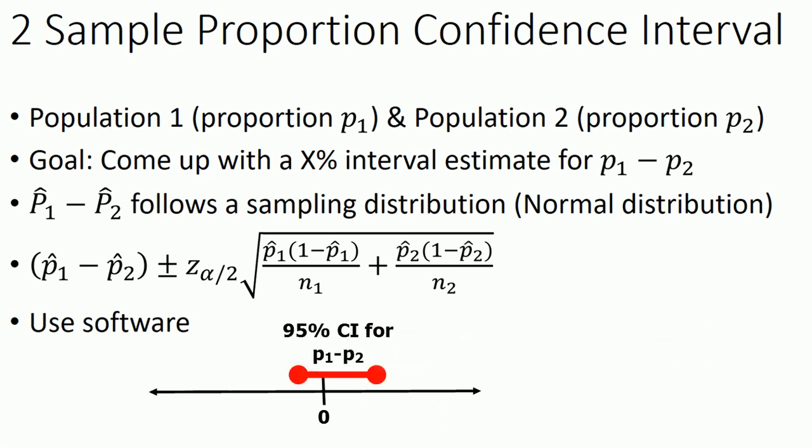If this confidence interval straddles zero, if the lower bound is negative and the upper bound is positive, we couldn't rule out with 95% confidence whether p1 was less than p2, equal to p2, or greater than p2, because all of those possibilities are within the range of our confidence interval.